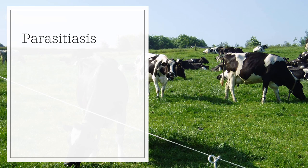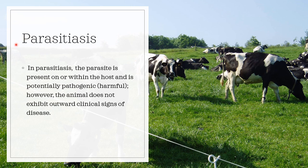Parasitism can occur in different degrees. For example, healthy cattle on pasture may harbor parasites in their gastrointestinal tract, but the cattle do not exhibit outward clinical signs of parasitism. This is an example of parasitiasis — the parasite is present on or within the host and is potentially pathogenic or harmful, however the animal does not exhibit outward clinical signs of the disease.